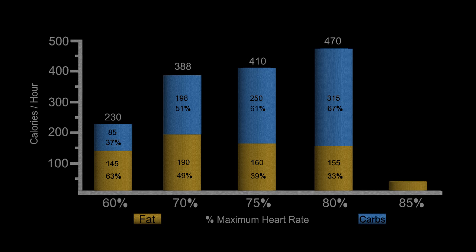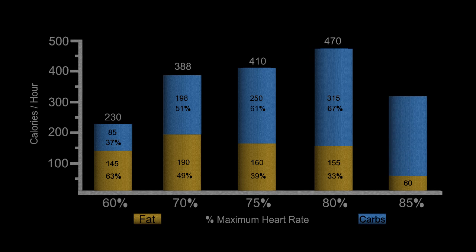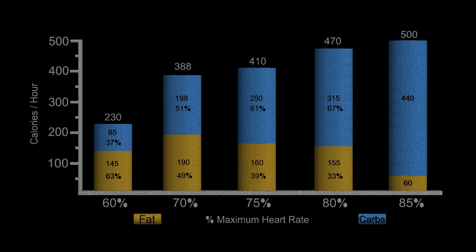And more dramatic at 85%, fat 60 kilocalories per hour. Carbohydrate goes up to 440 kilocalories per hour for a total of 500 kilocalories per hour. 12% of the energy coming from fat, 88% coming from carbohydrates.